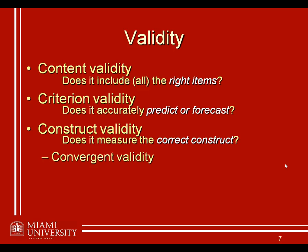We can establish construct validity two ways. The first is through what we call convergent validity. We call it convergent validity because if there's some other way to measure the construct in which we're interested, we want that instrument and our new instrument to converge and produce similar scores. In a sentence, convergent validity talks about whether or not our measurement agrees with other related measures of the same or similar constructs. So let's say I develop some new intelligence test — one way to establish construct validity is to see whether or not it agrees with current well-established measures of intelligence, such as the Wechsler test or IQ test.